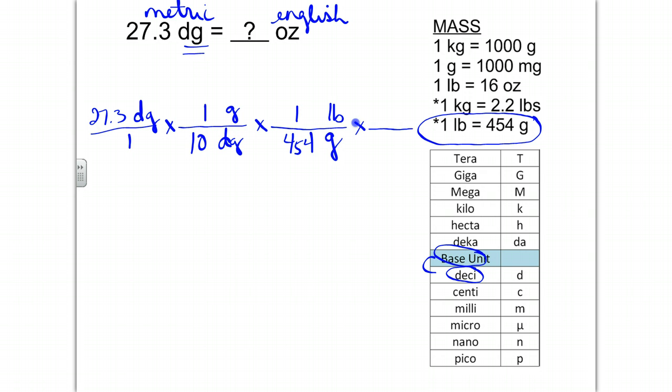Now, I'm in the English system officially. I'm going to bring down pounds, and I'm going to go through these conversion factors until I find the right one. In this case, 1 pound equals 16 ounces. So now, I'm going to make sure everything cancels properly. Decigram, gram, pound. And we're left with ounces.